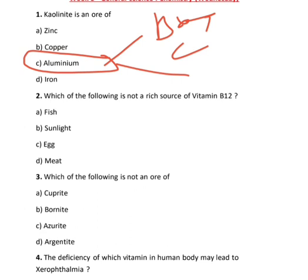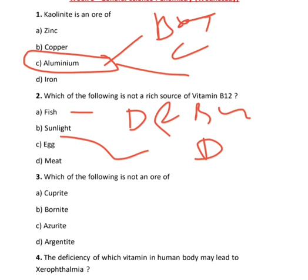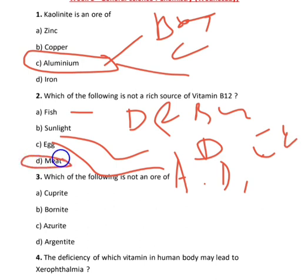The next question is which of the following is not a rich source of vitamin B12? In fish there is vitamin D and B12. In sunlight there is only vitamin D. In eggs you have vitamins A, D, E, K, and B5, B9, B12. In meat there is B12. Technically sunlight does not have B12, only vitamin D. The correct option is B, sunlight.